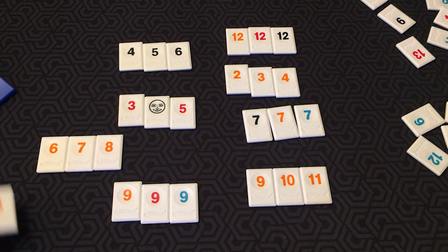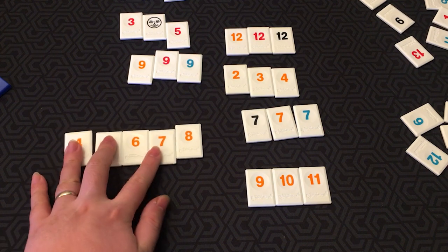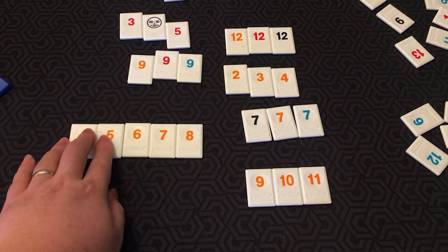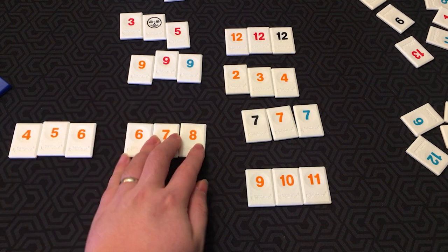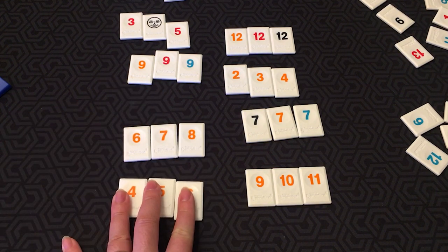You can also split a run. Let's say I had this on the table. I could split it by taking this apart and adding a 6 from my hand, and now I've successfully split a run.